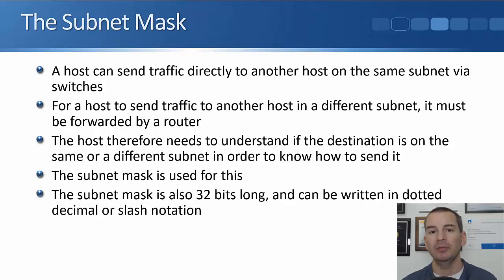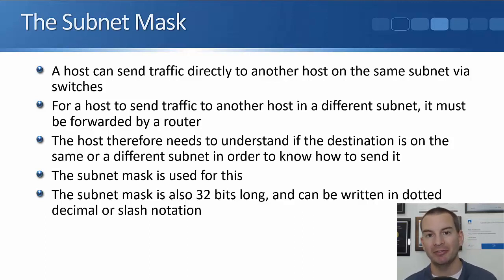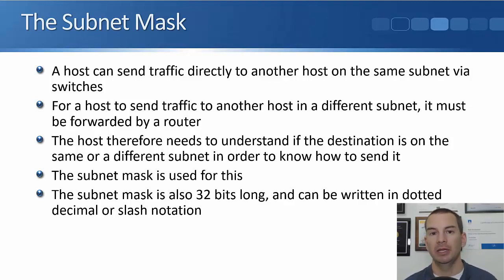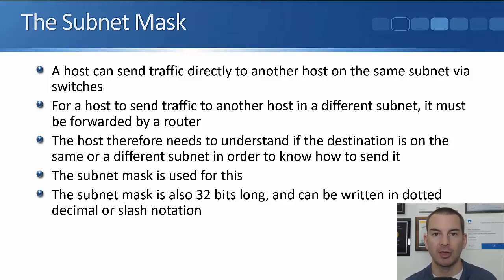The way a host knows whether the destination is on the same subnet or a different subnet is by comparing the IP address of the destination to its own IP address and subnet mask. The subnet mask, just like the IP address, is also 32 bits long. It can be written in dotted decimal notation the same as IP addresses, or it can be written in slash notation, which you'll see later in this lecture.